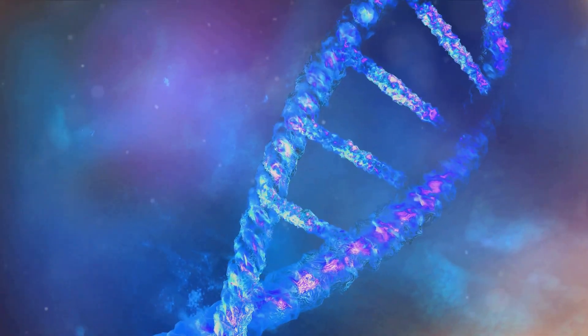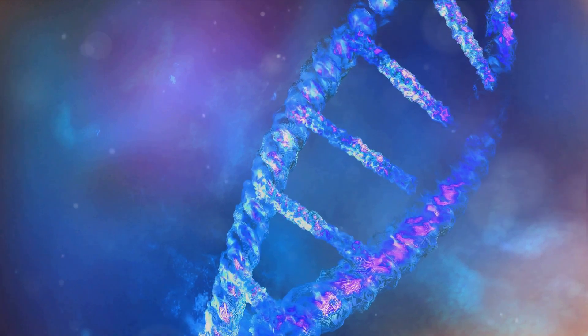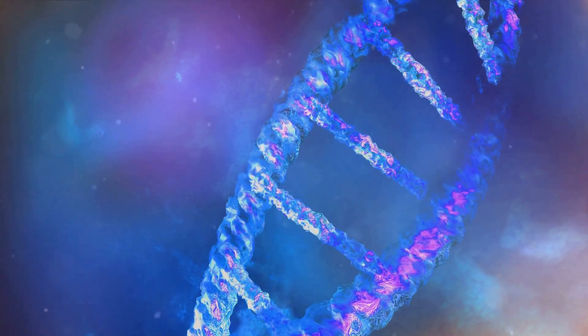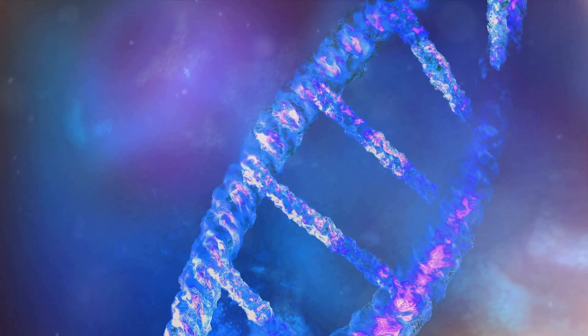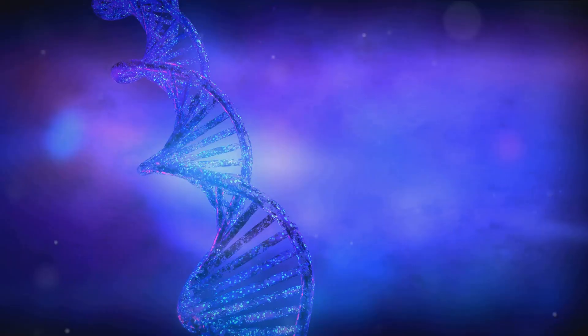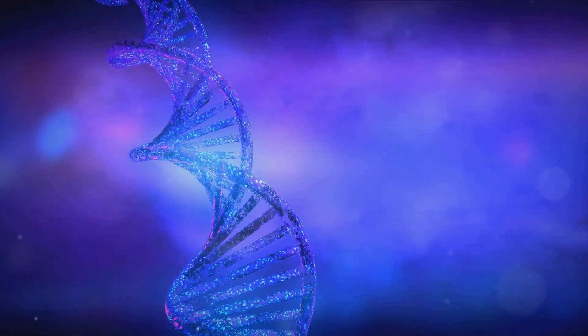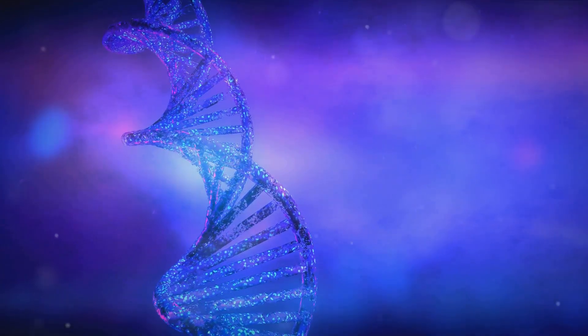There are at least five major DNA repair pathways. Each of these pathways is active at different stages of the cell cycle, highlighting the cell's continuous efforts to maintain its genetic integrity. The first pathway is base excision repair, or BER.